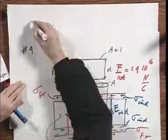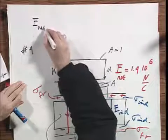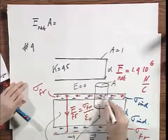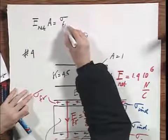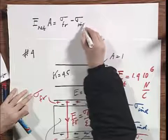First, I'm going to say that E net times that area A is the total charge inside that box divided by epsilon zero. What is the total charge inside that box?